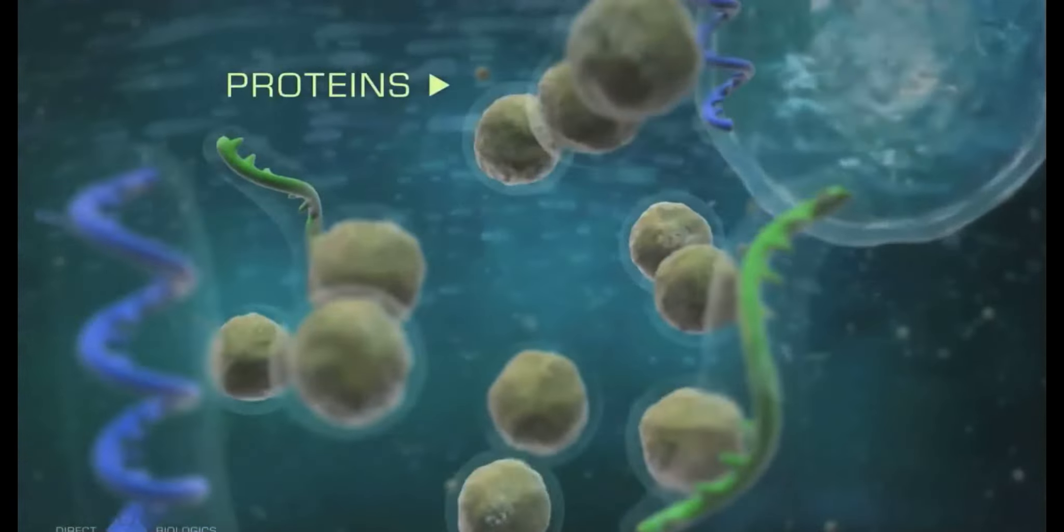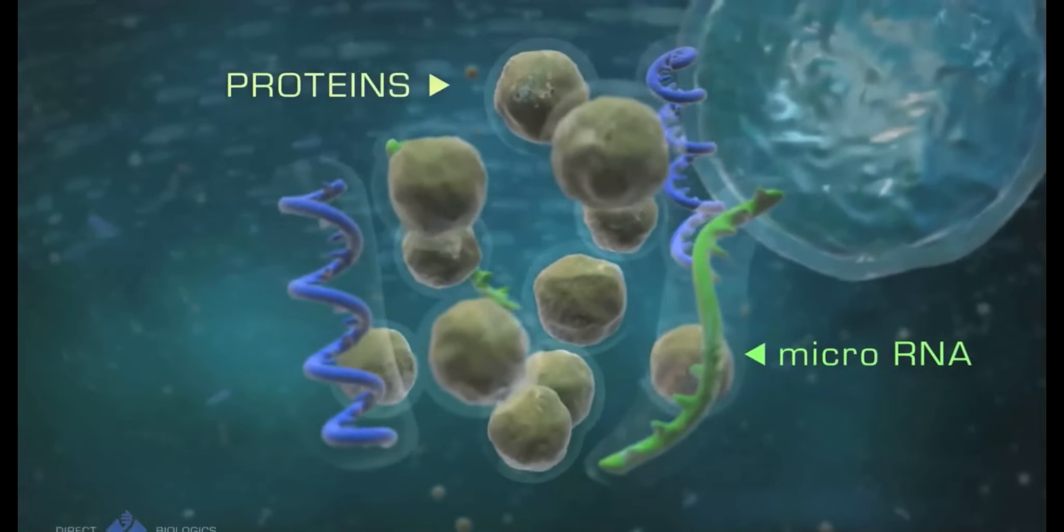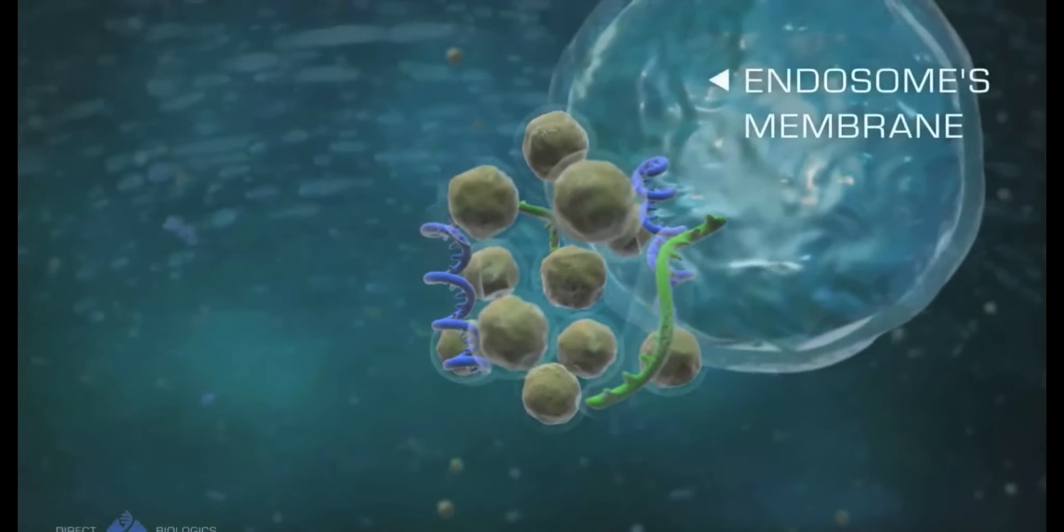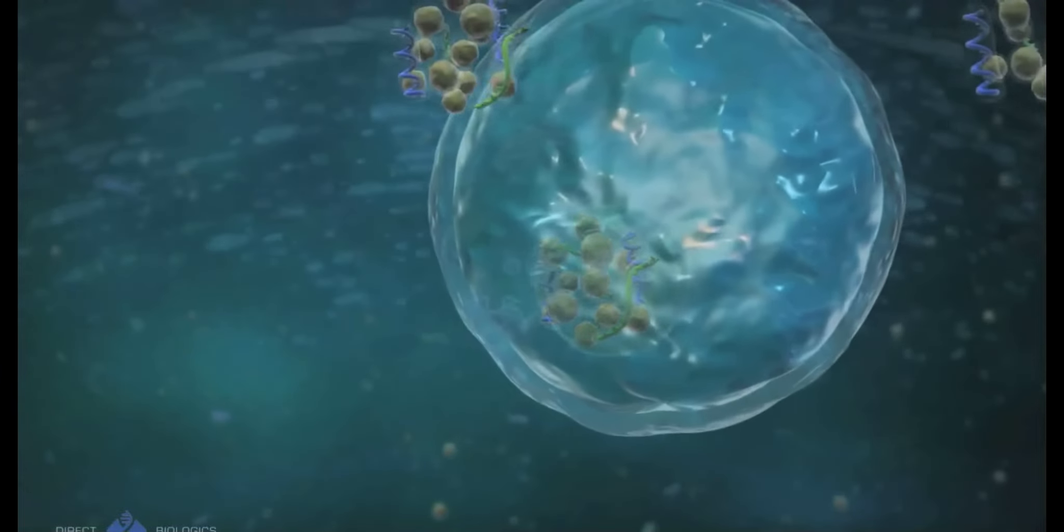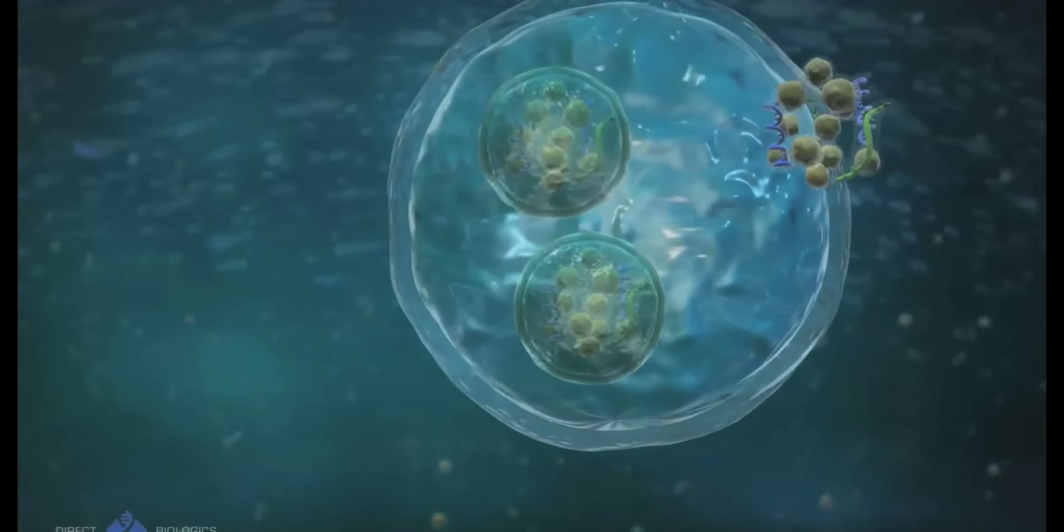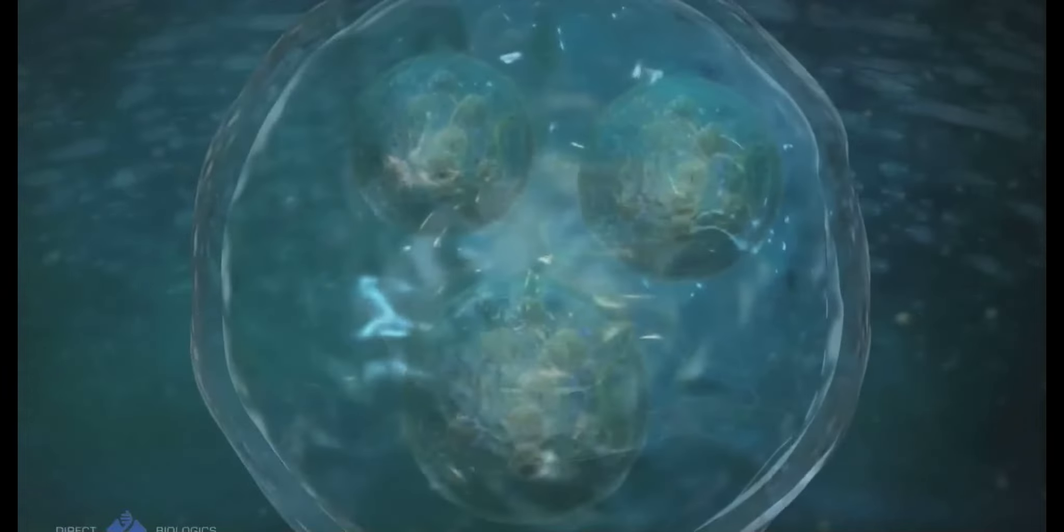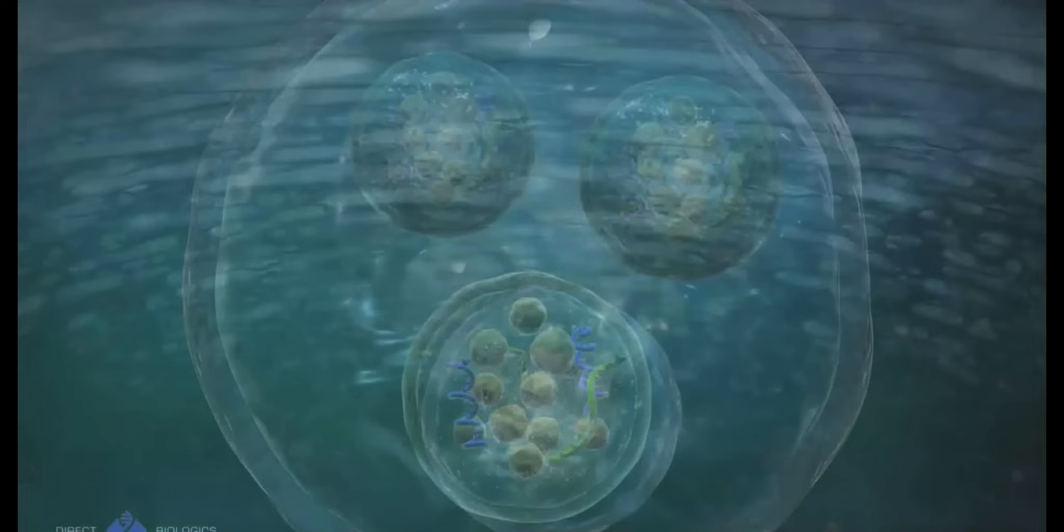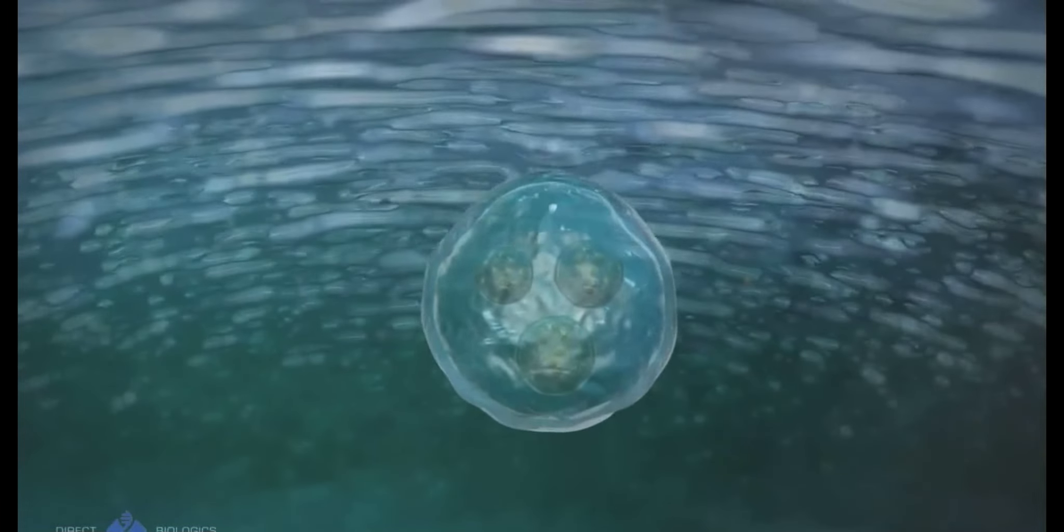Then the proteins, microRNA and messenger RNA invaginate the endosome's membrane, forming the exosomes. Endosomes then fuse with the surface of the cell, releasing the exosomes outside of the cell.